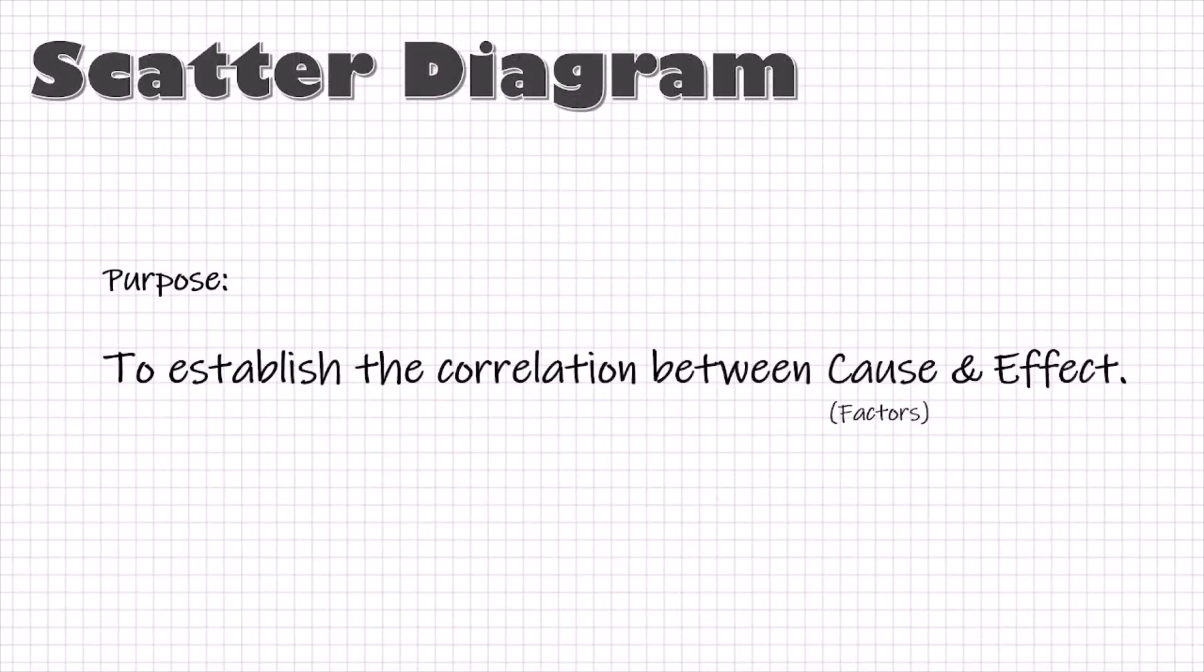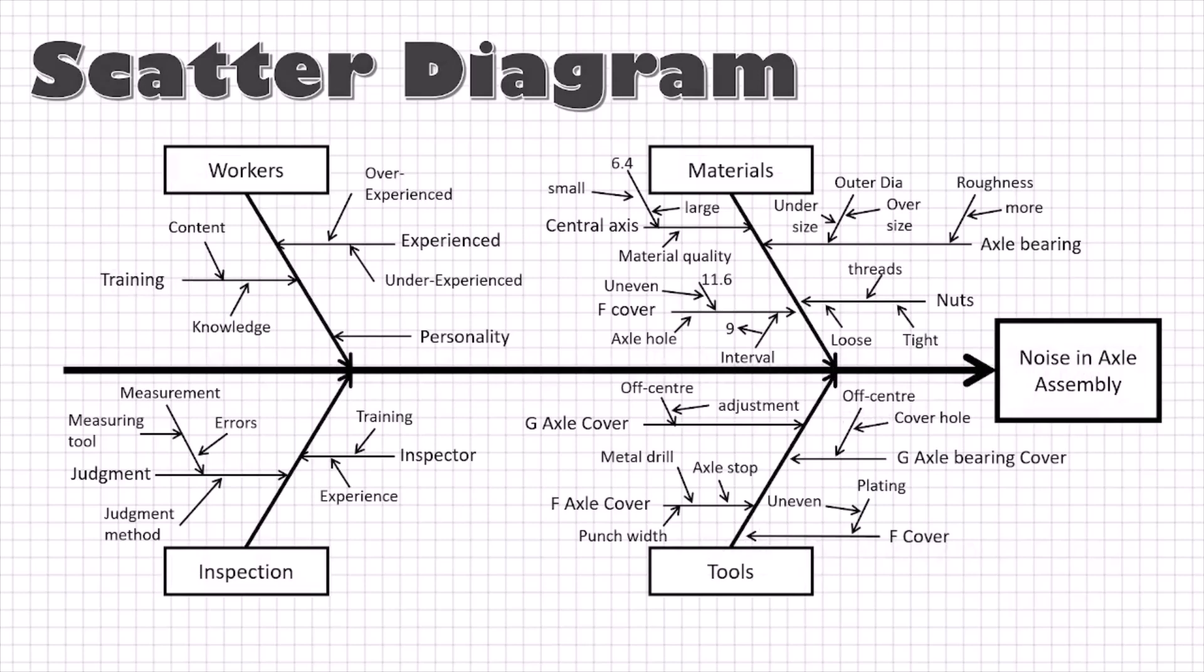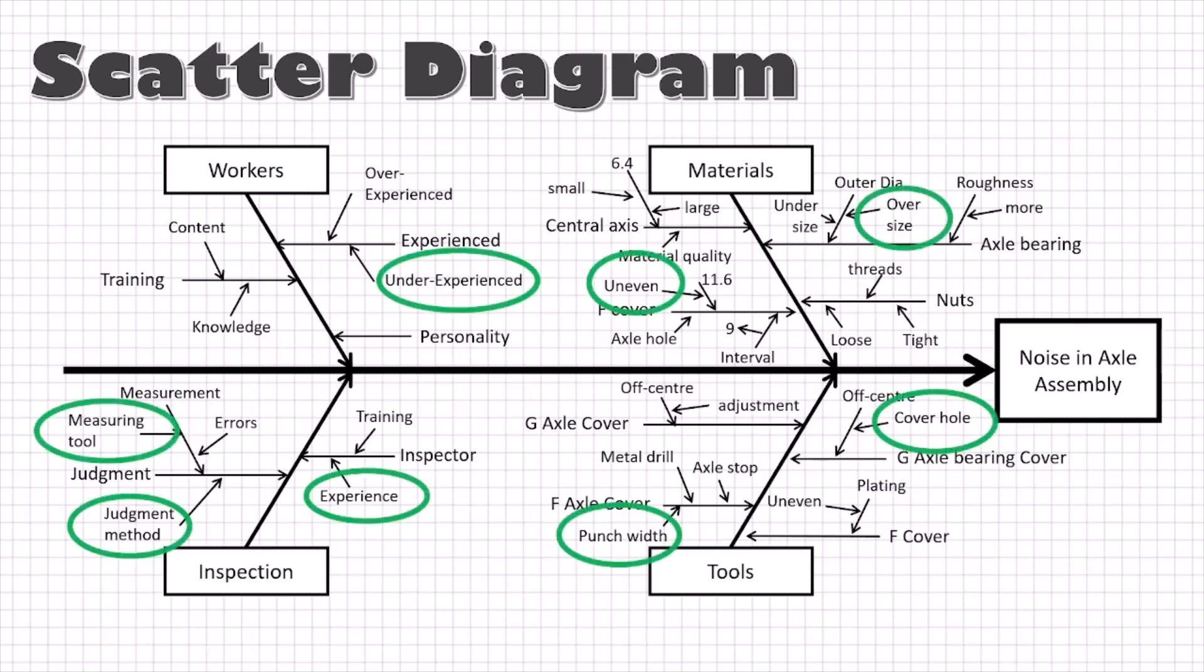A scatter diagram is a graphical representation of the relationship between cause and effect, or between two causes. This tool can also identify the strength and direction of the relationship between two variables. So once you have identified a few potential causes using an Ishikawa diagram, now we should be studying the relationship between the potential cause and effect, keeping the effective or related ones, and dropping the ineffective or unrelated ones.